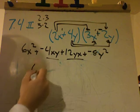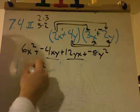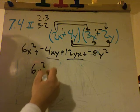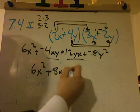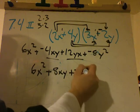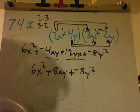So I can add the coefficients together. So I'm going to have 6x squared plus 8xy plus negative 8y squared. That's all I can do though. I'm done.